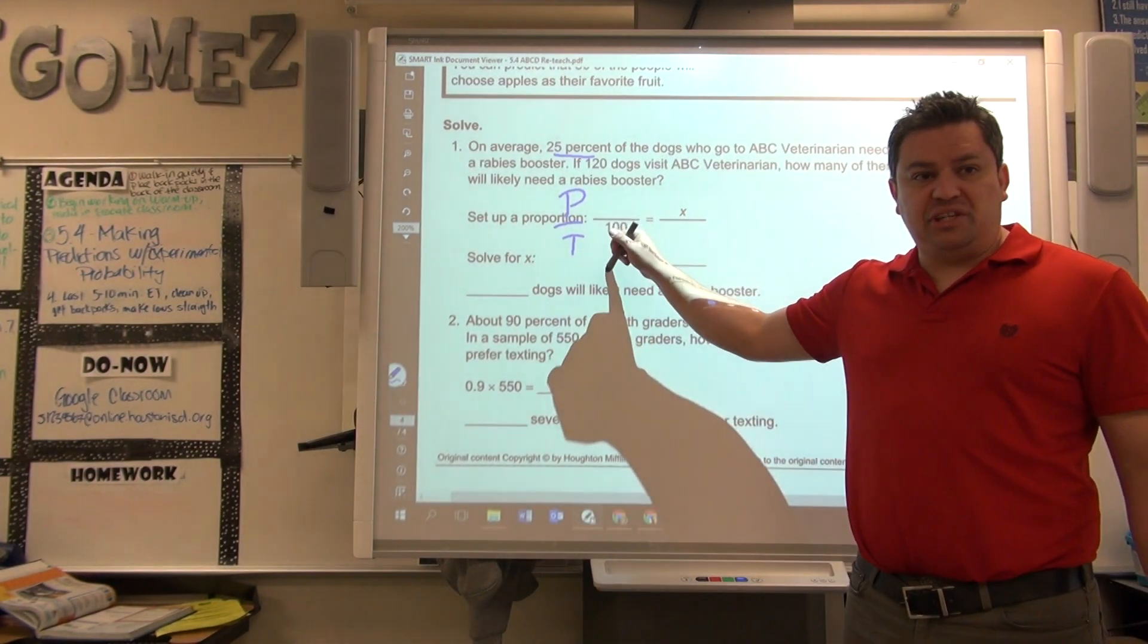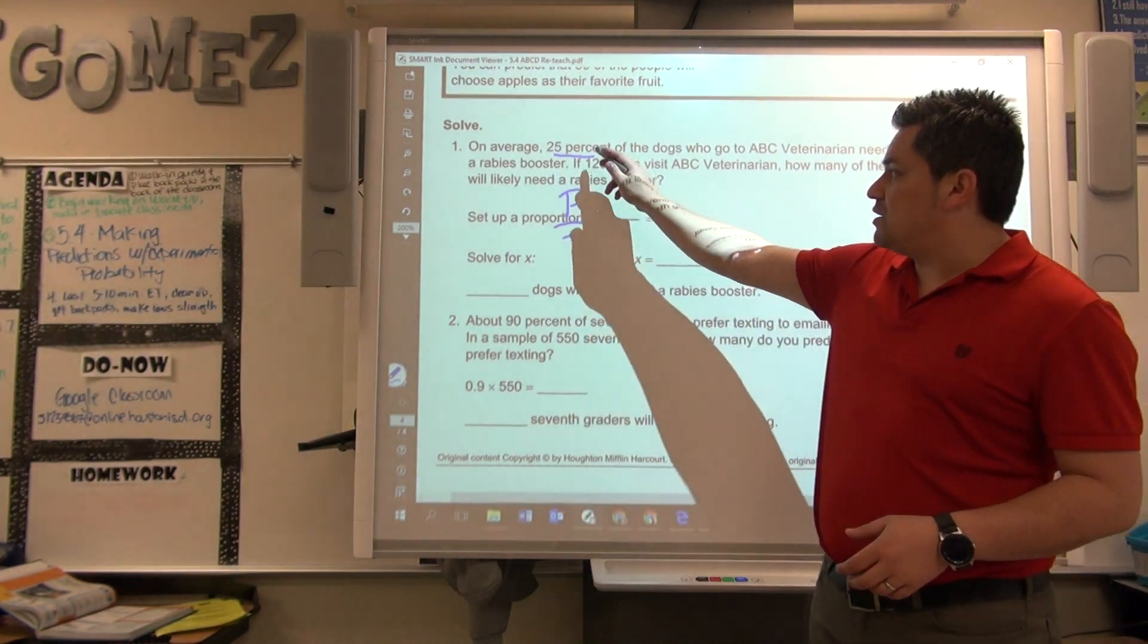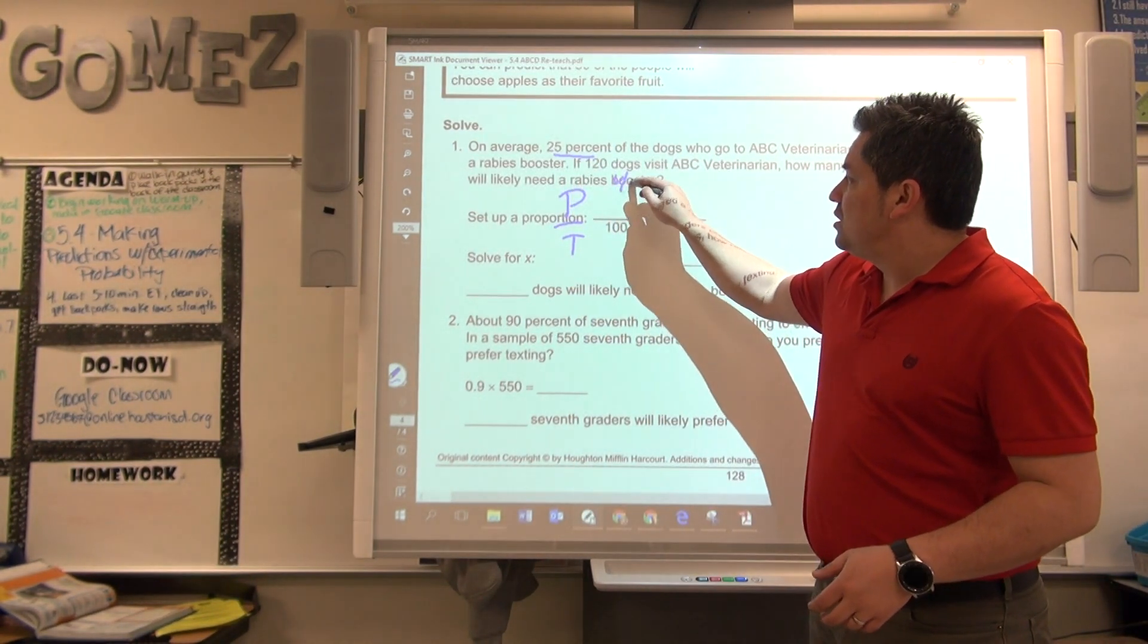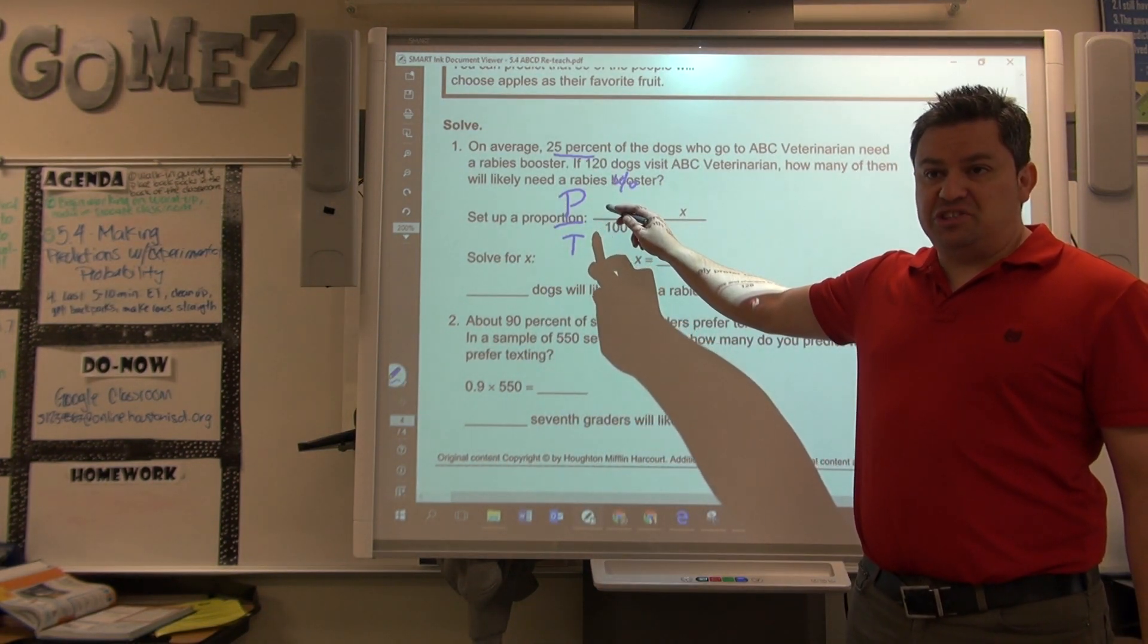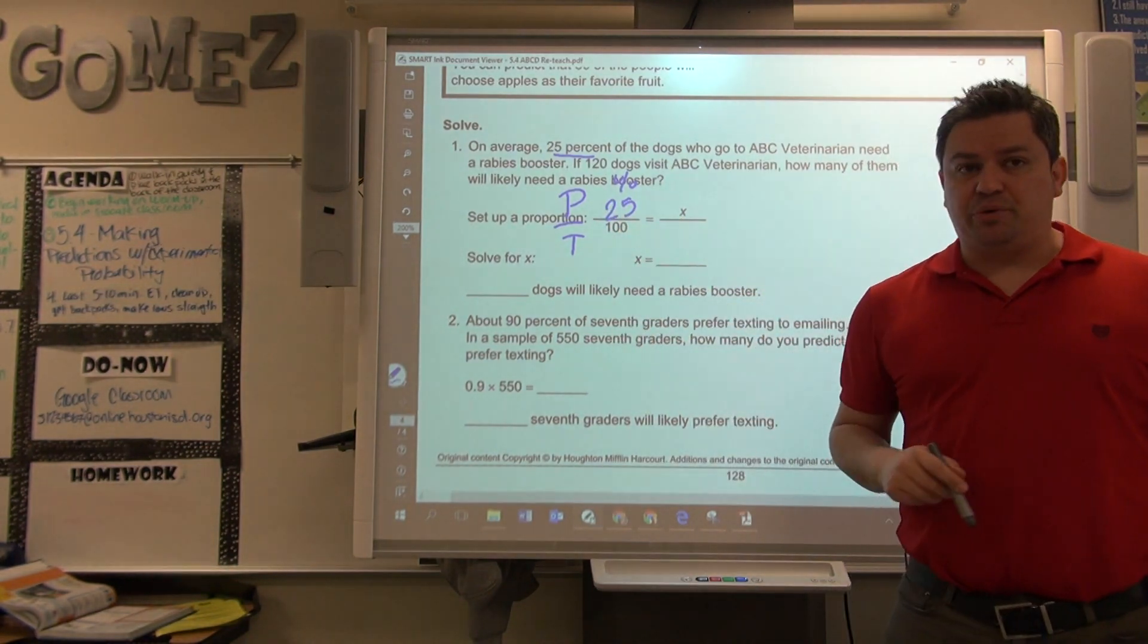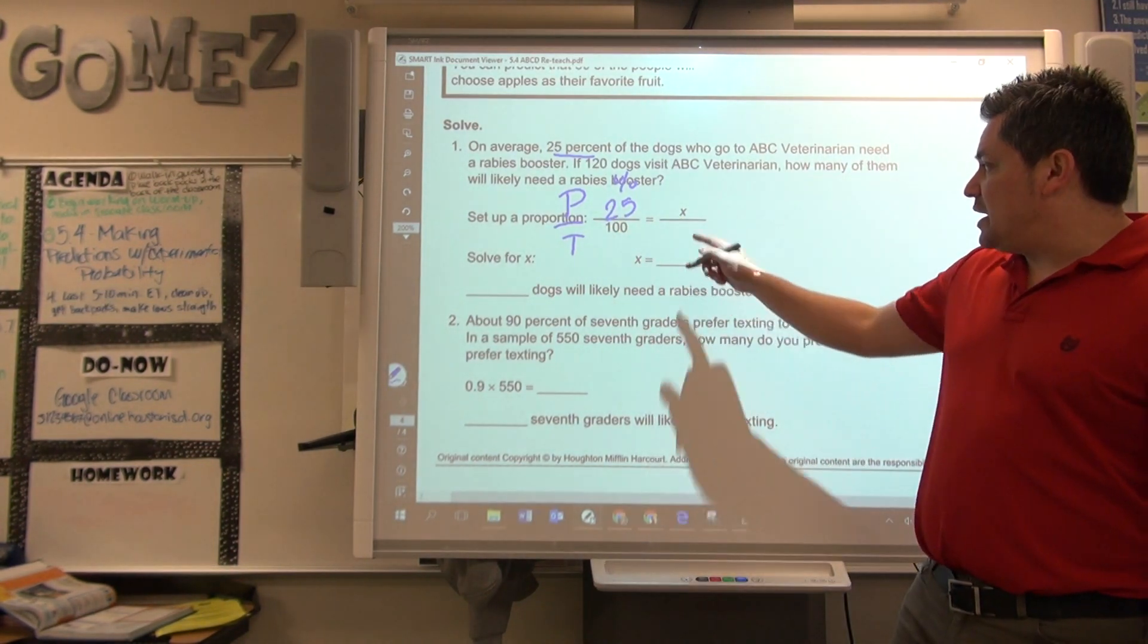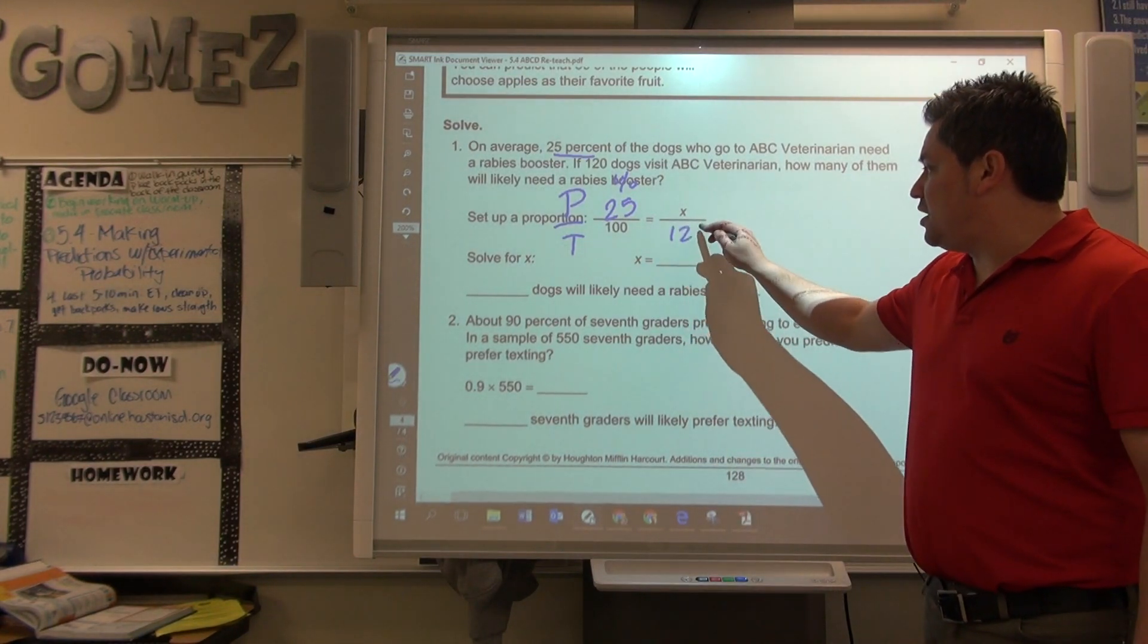The hundred, that's the hundred for the percent, because we're talking about percentages first. So, what goes right here? What's my percent? Twenty-five. Twenty-five percent out of a hundred percent. Then, X equals, what's the total number of dogs? 120. That goes right here.